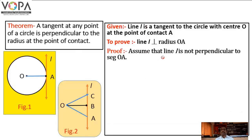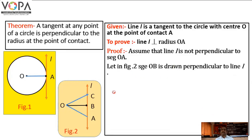Proof: Assume that line L is not perpendicular to segment OA. In figure 2, segment OB is drawn perpendicular to line L.